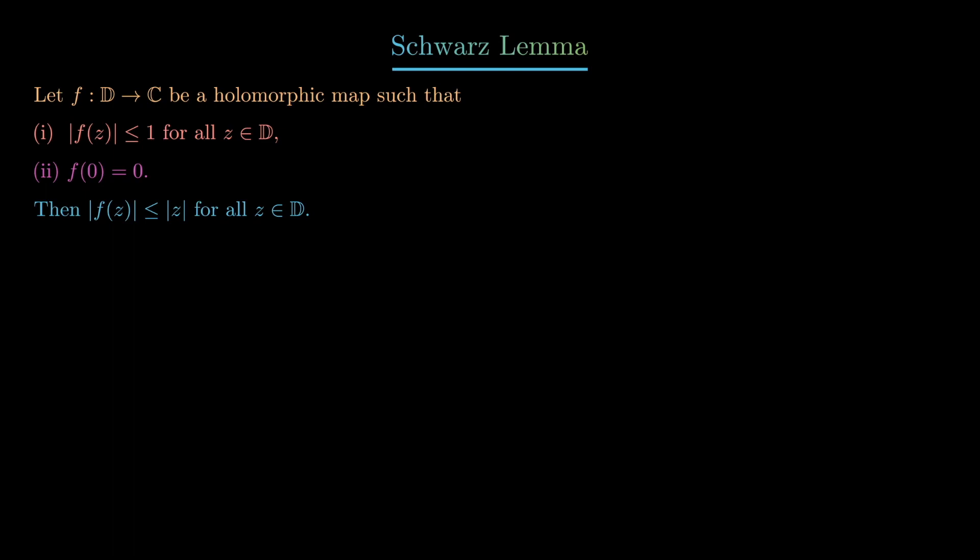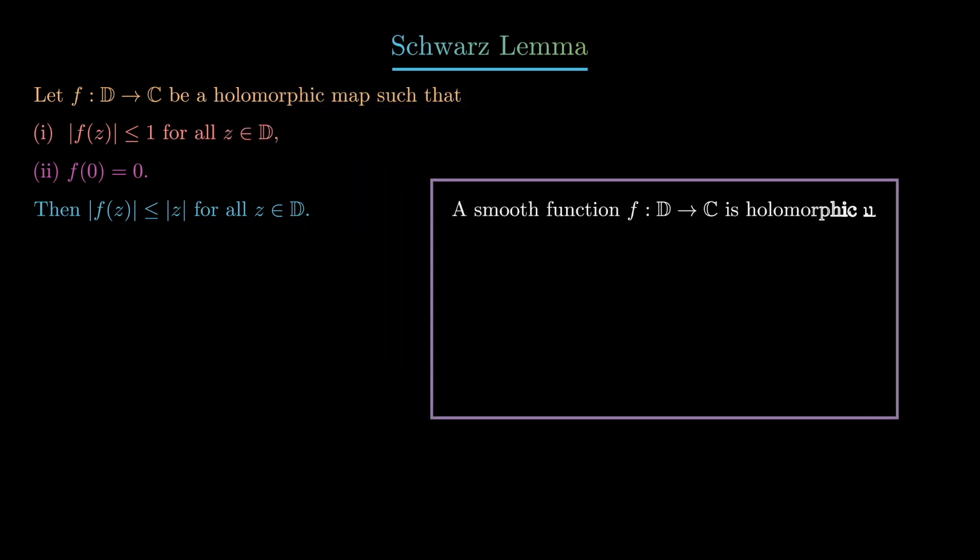There's a lot going on in the statement of this, so let's flesh out each part. Recall that a smooth function f from the unit disk into C is holomorphic if d-bar of f vanishes. So if we take the complex conjugate derivative, the derivative of f with respect to z-bar, then f is holomorphic if and only if this vanishes.